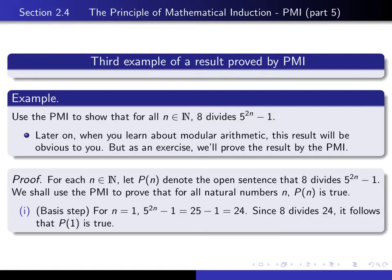Here's the beginning of my proof. I begin by setting things up, by telling you what are all of the open sentences that I wish to prove are true. For each n in the natural numbers, we let P(n) denote the open sentence that 8 divides 5 to the 2n minus 1. And we tell the reader that we're going to use principle of mathematical induction in order to prove that for all natural numbers n, P(n) is true.